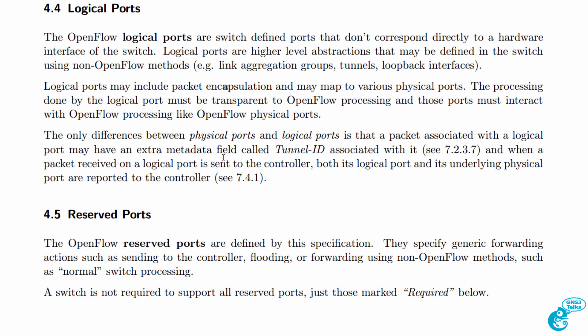For the real world, understand that when you put physical ports into a link aggregation, OpenFlow and the controller have no visibility of the physical interfaces. The controller will only see the logical interface — in other words, the link aggregated interface. So if you have two physical interfaces in an EtherChannel and one goes down, the controller is not aware of that because it still sees the link aggregated interface as up.